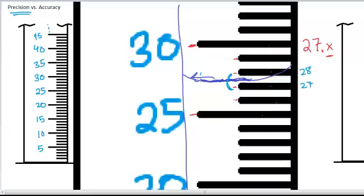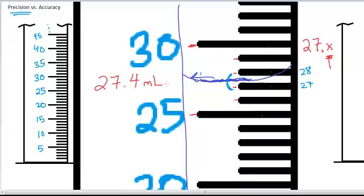The precision of this glassware is such that I can read one decimal place — that's the precision of these markings, because that is my estimation in between them. You never record more than one uncertain digit in a measurement; you always stop at the first estimated digit. So I might record 27.4 milliliters. My partner might say it looks more like 27.5 or 27.3 — that's fine because we are estimating it.